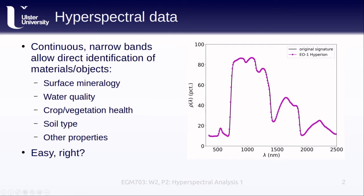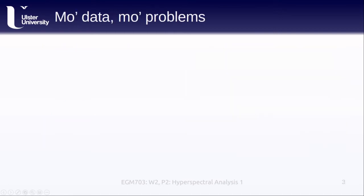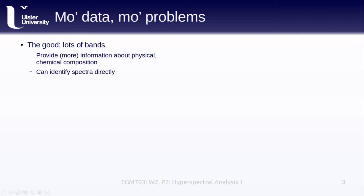The good thing about hyperspectral data or images is that they have lots of bands. This means that they provide more information about the physical and chemical composition of materials. As I've said a few times, it means that we can identify spectra directly. It also means that we have more information about atmospheric characteristics, since hyperspectral sensors normally acquire data at wavelengths that don't correspond to atmospheric windows, unlike most multispectral sensors.